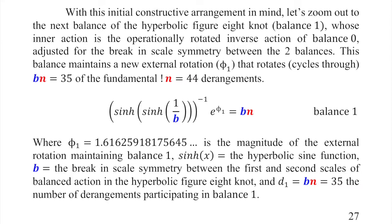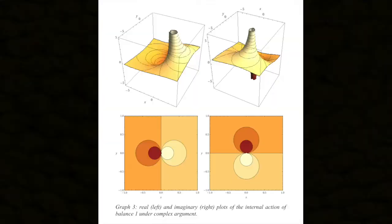We have the inverse hyperbolic sine of the hyperbolic sine of 1 over our break in scale symmetry — our internal split constructive balance — in perfect balance with the internal balance already set. The derangements of that balance are B × n. Since we know what B and n are, we can easily solve for the value of the external rotation maintaining this second balance. When we solve for rotation 1, we get 1.61625918175645… So we now have two geometric numbers characterizing the external projective rotations of our entire five-part system.